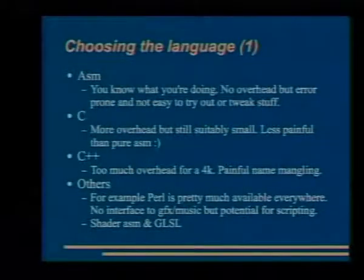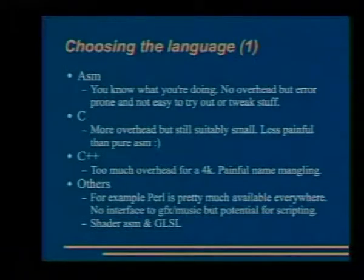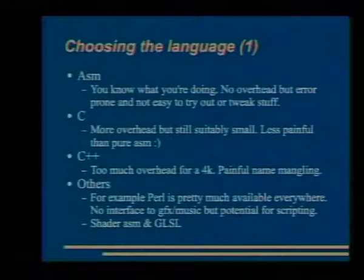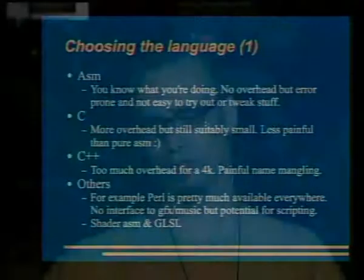Unfortunately, you can't use C++. There are all sorts of overheads — startup code and name mangling — it makes it difficult to interface with assembly language. For a 4K intro you wouldn't want any big object database anyway, so C is pretty okay. With Linux, I haven't seen anybody do this, but Perl is pretty much available everywhere — a working Linux setup must include Perl. You might consider making the engine in C and scripting it with Perl, because you get very dense code with Perl. I haven't done this, but it's just some food for thought.